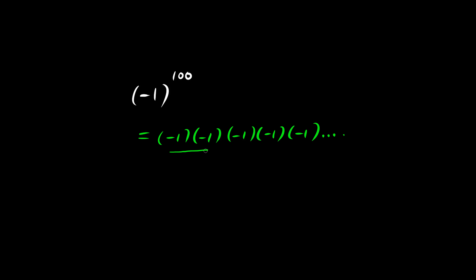Every pair of negative 1's is positive, because negative 1 times negative 1 is positive 1. So each pair becomes 1, giving us 1 times 1 times 1 times 1, and so on.